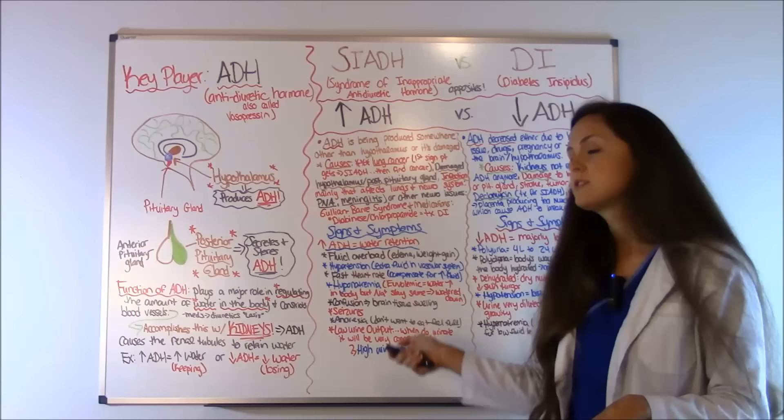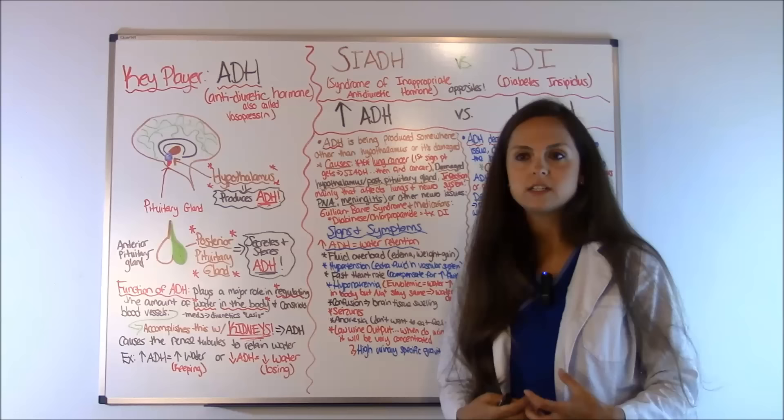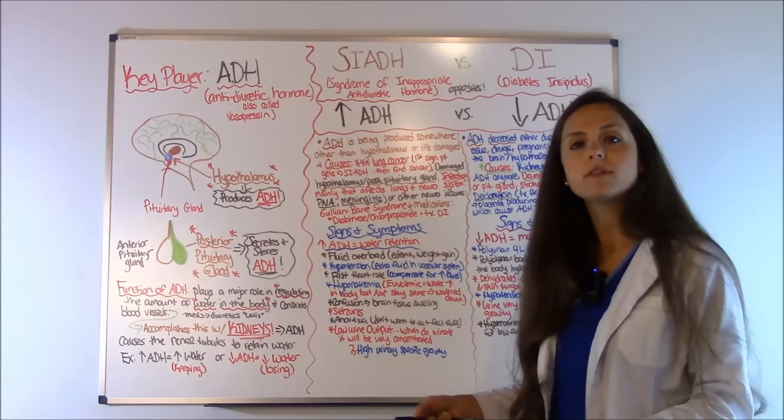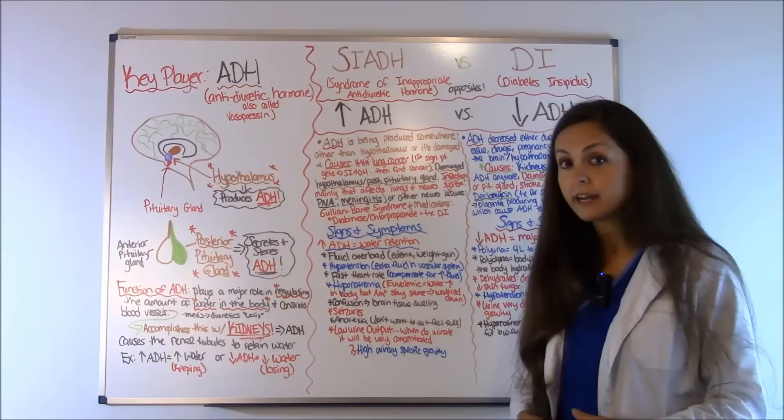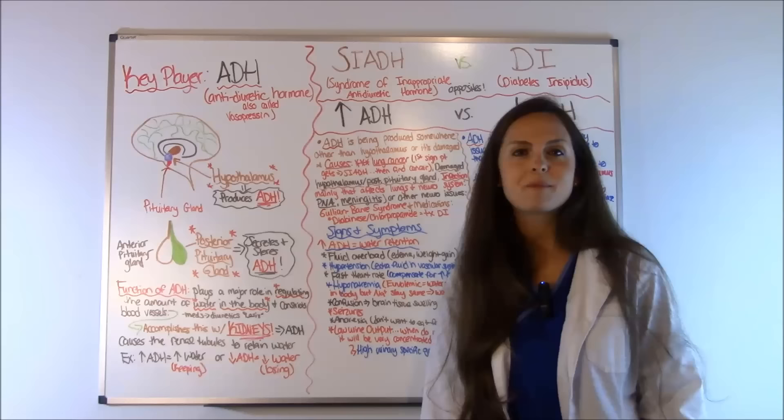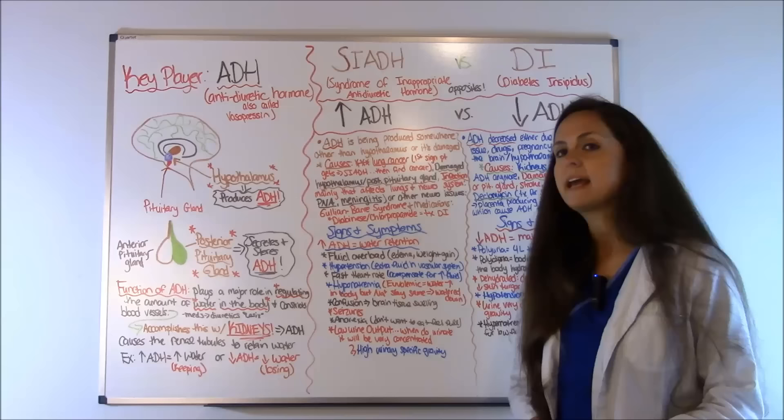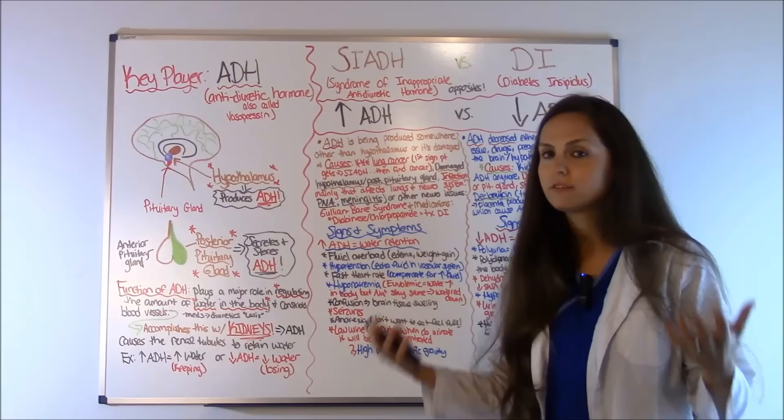SIADH patients will also have anorexia because they are so full of water, with pressure on the stomach causing them not to feel hungry. Very importantly, they're going to have low urine output, and when they do urinate it will be very concentrated — meaning they'll have a high urinary specific gravity. The kidneys are holding onto all that water because of all that anti-diuretic hormone signaling them to retain fluid.